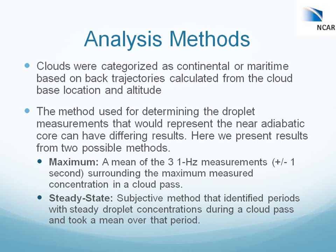Focusing on the droplet spectra, we categorized the clouds as continental or maritime based on back trajectories calculated from the cloud-based location and altitude. Ideally you want to look at the initial droplet spectra resulting from nucleation on all of the aerosol measured at cloud base, but there can be effects from entrainment and cloud edge effects as you fly through the cloud. Determining the representative droplet spectra is not straightforward, so we're presenting a couple of different methods to compare — and there are many other methods in the literature that also need to be pursued.